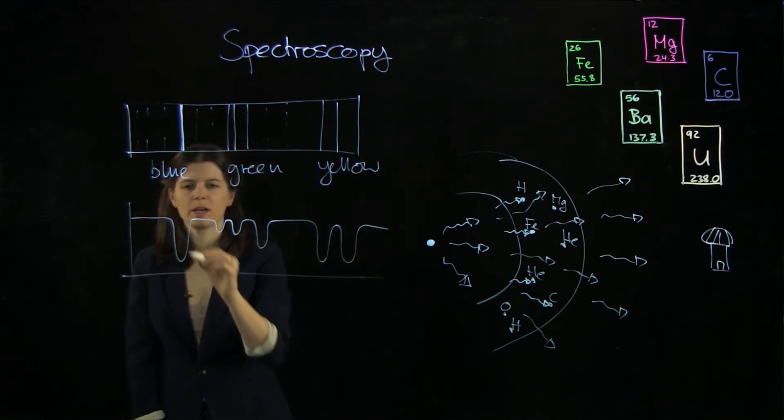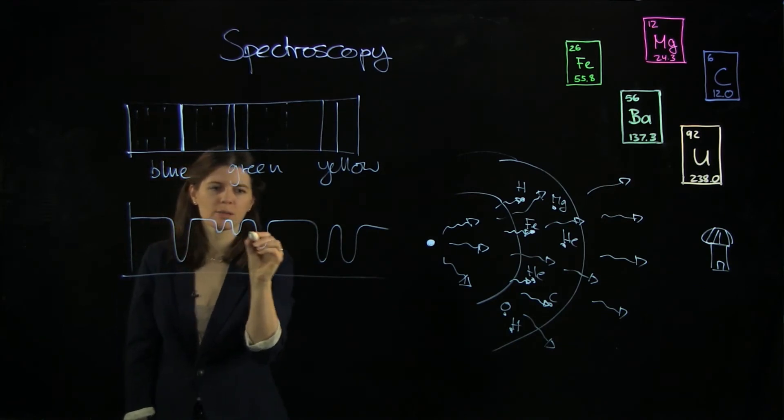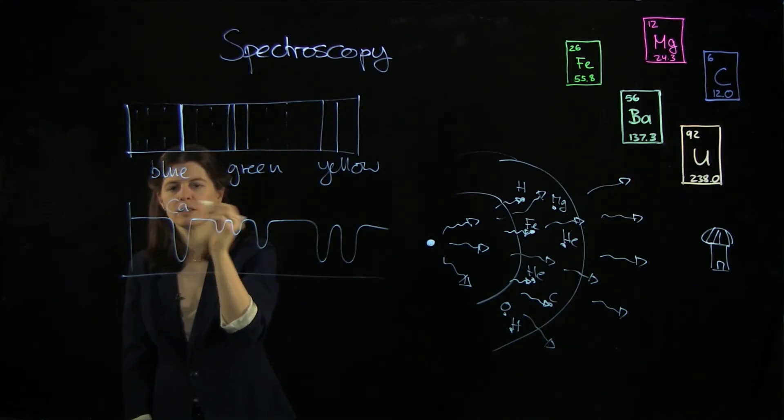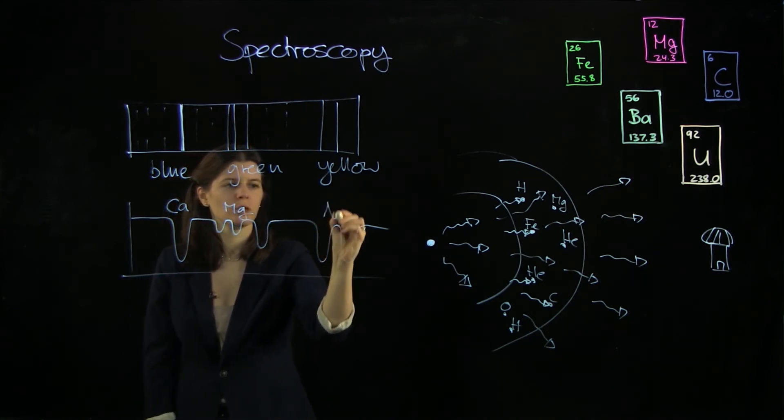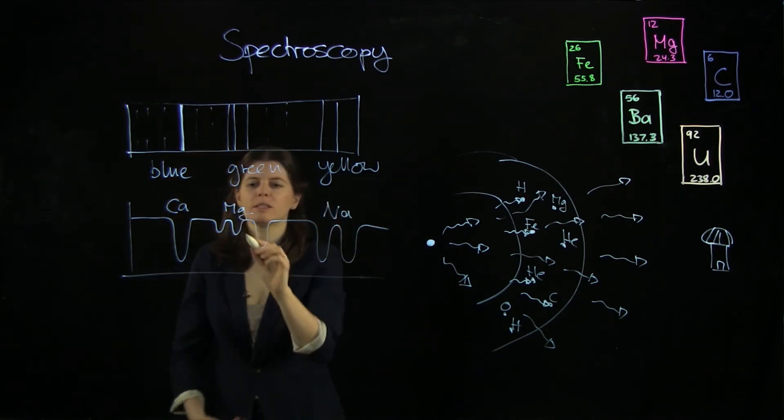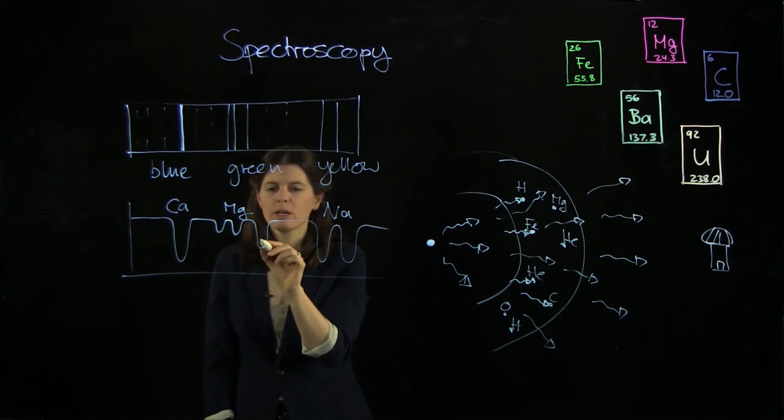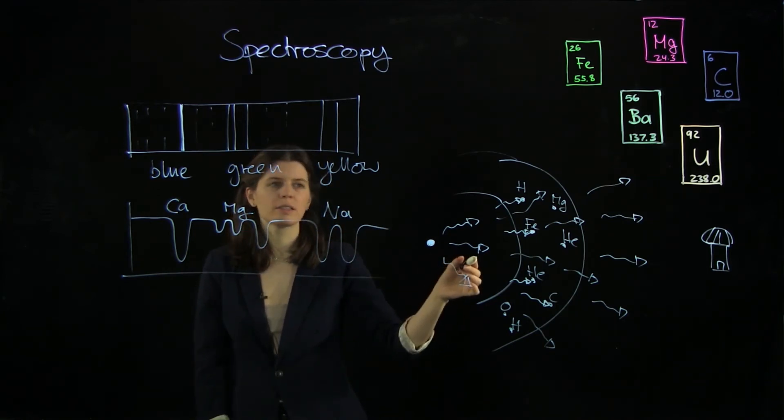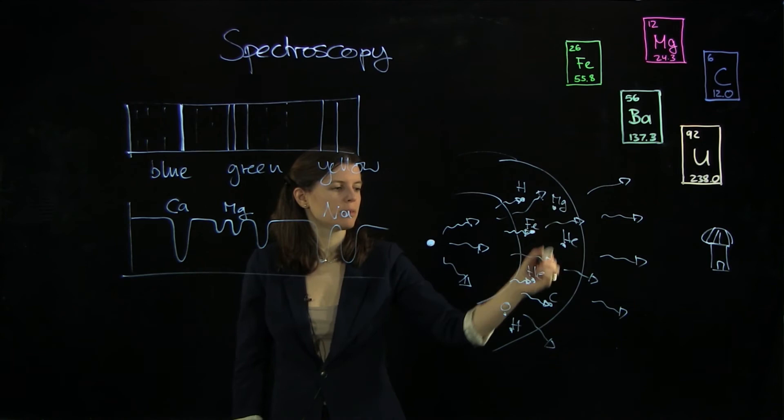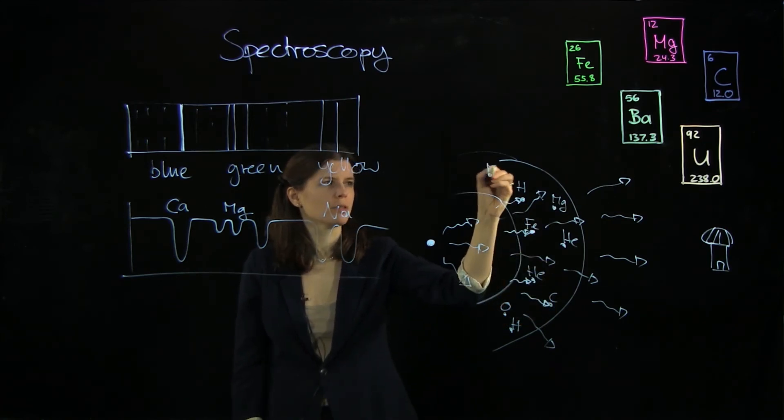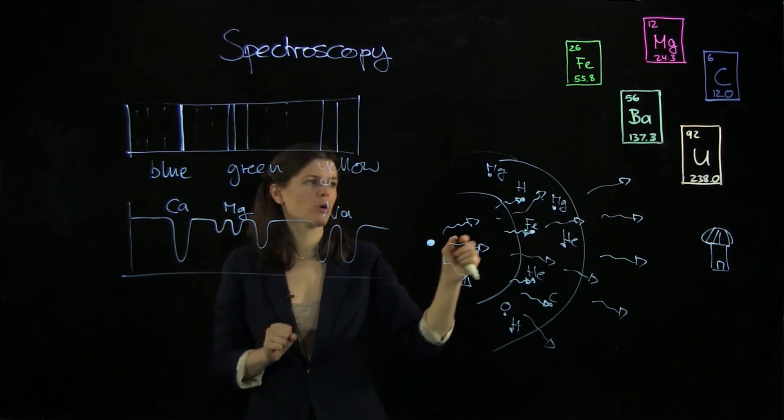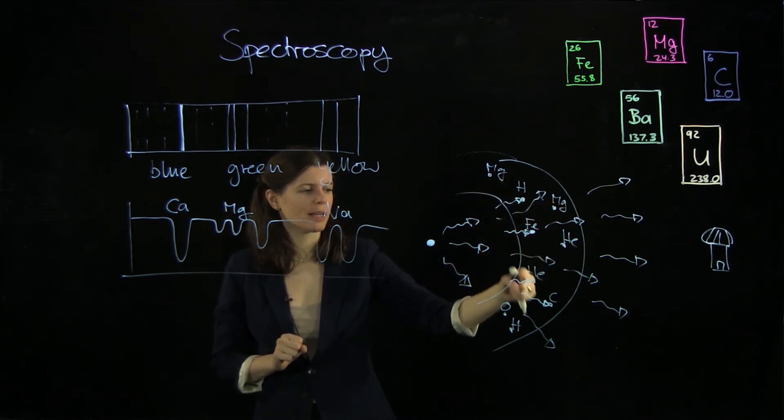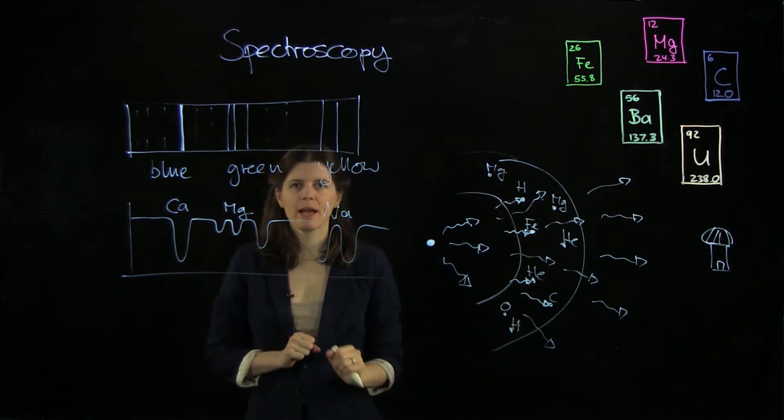And so there's a strong absorption here, less absorption here. Let's say that this is our calcium, that's a calcium line here, and these are three magnesium lines, these are two sodium lines. Then we can see from these line strengths here what the abundance of the magnesium atoms here is. So line strength here corresponds to abundance of magnesium atoms in the outer atmosphere.